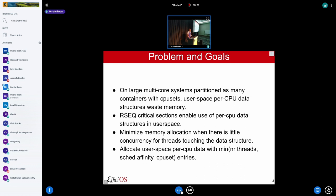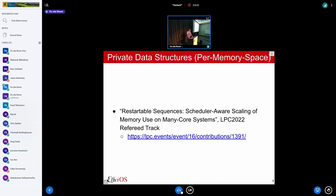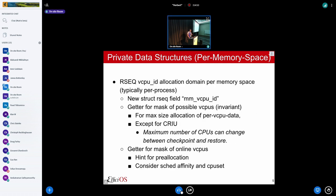So ideally we want to allocate user space per CPU data with number of entries being a minimum between the number of concurrent threads that can touch that data, the sched affinity and the CPU set. And it's also limited by the number of online CPUs. If you want more details about the RSEC per memory space virtual CPU ID, I recommend that you go and see my talk, the talk I gave on Monday in the referee track. But a quick problem summary. This is really the per process part. So let's say you have a memory allocator, your free lists, your memory arenas are local to your process. So it's a private data structure.